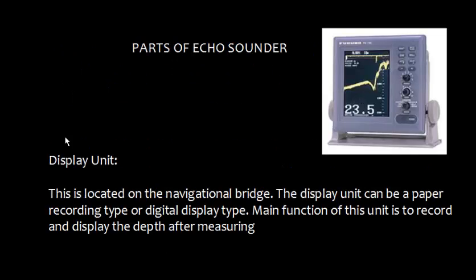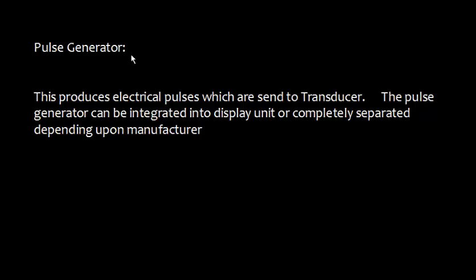Now let's discuss the parts of the echo sounder. The first is the display unit, which is located on the navigational bridge where we need to monitor the depth. The display unit can be a paper recording type or a digital display type. The main function of this unit is to record and display the depth after measuring.